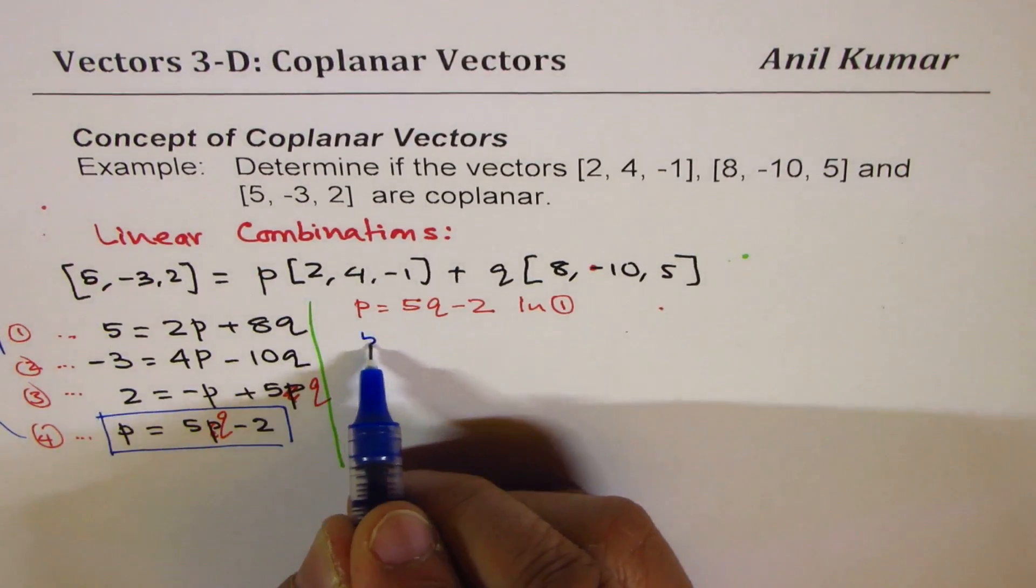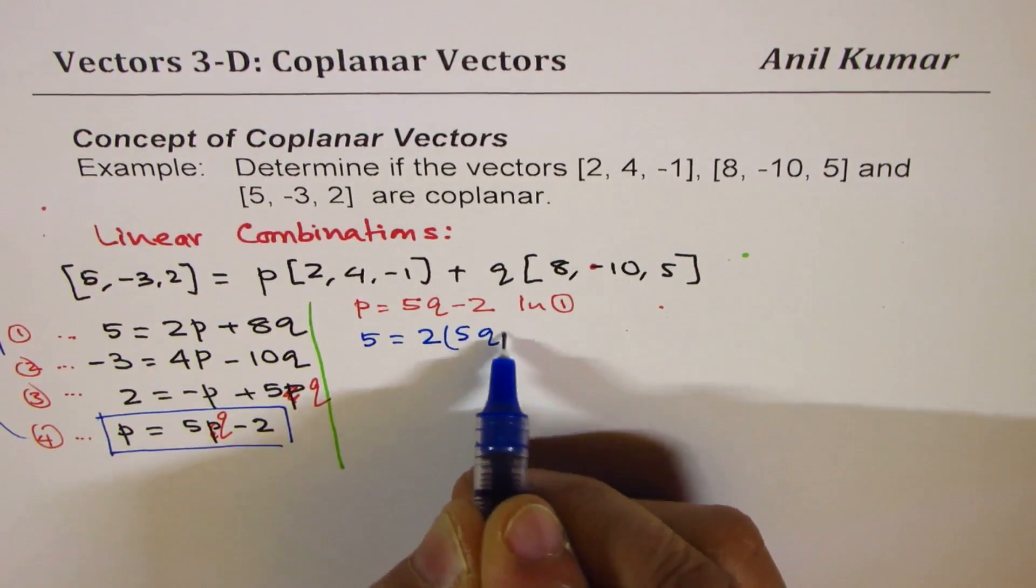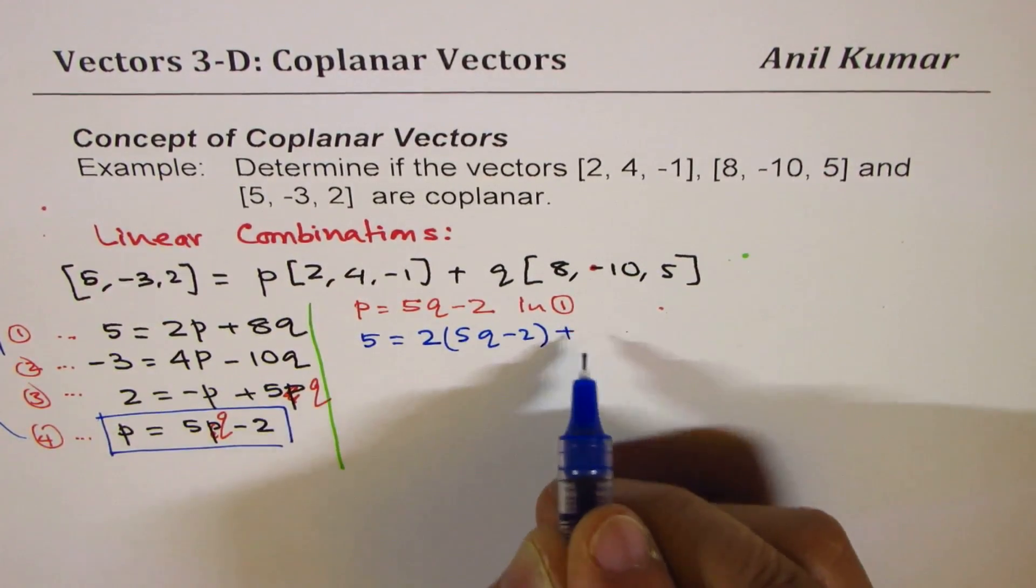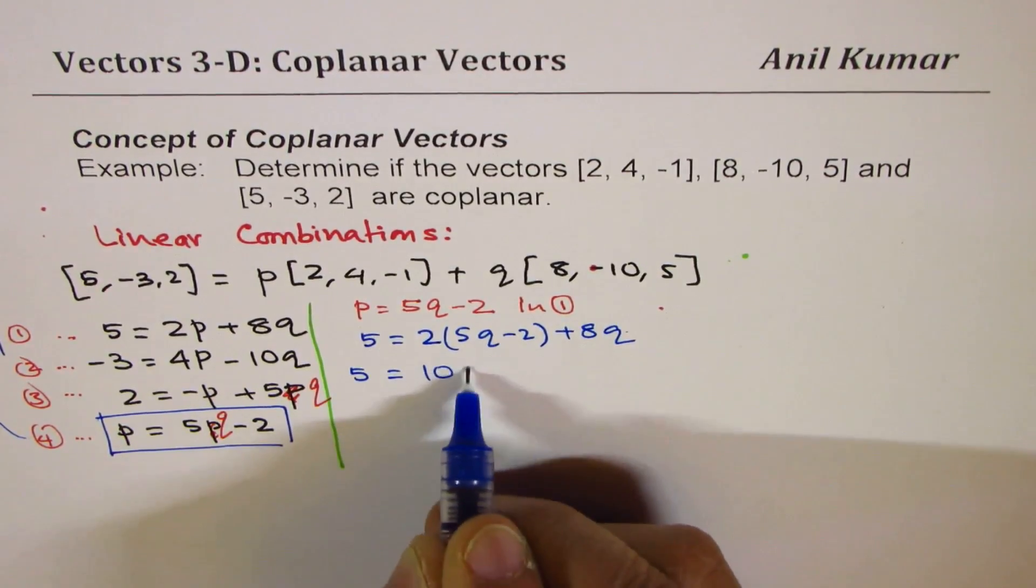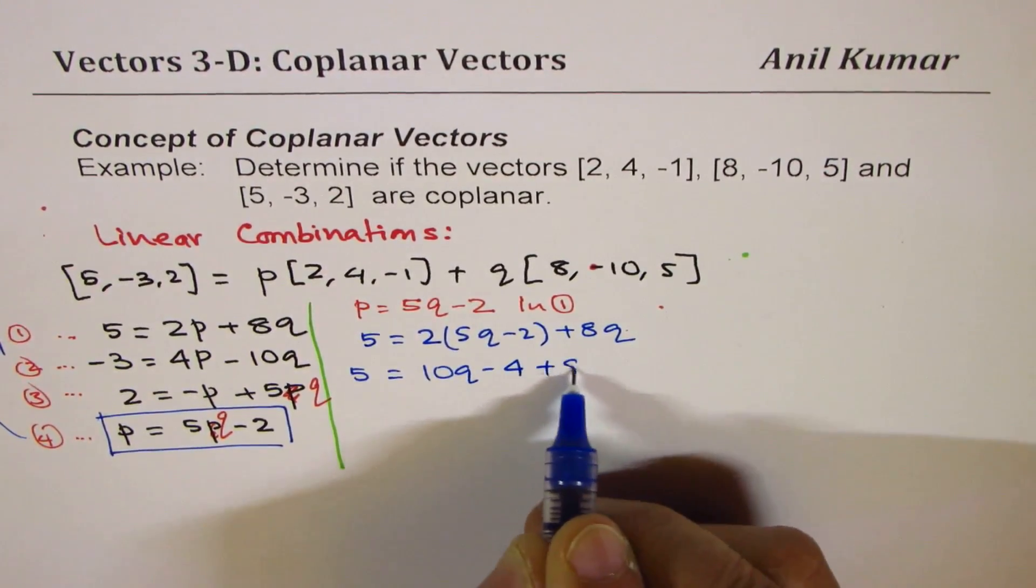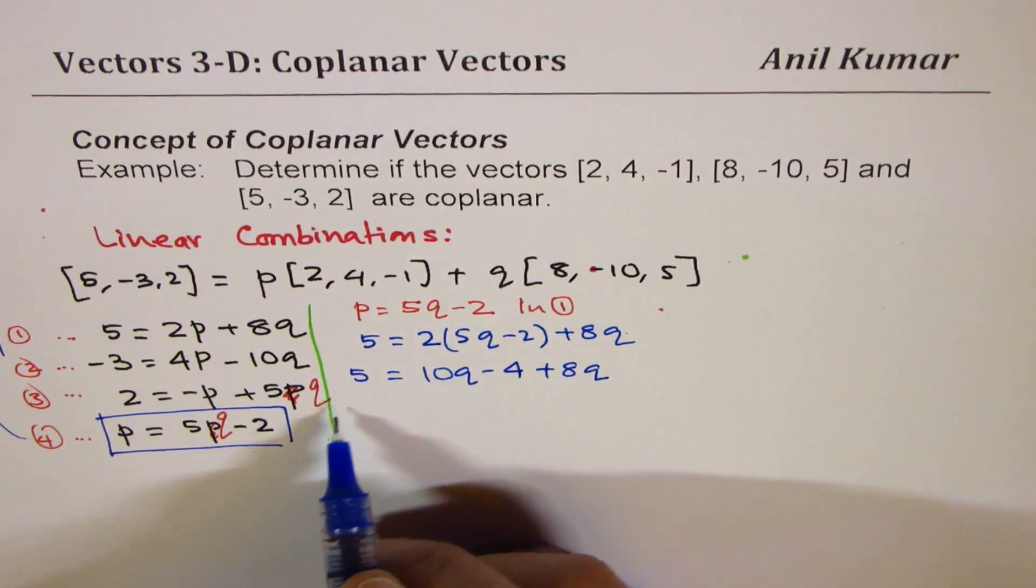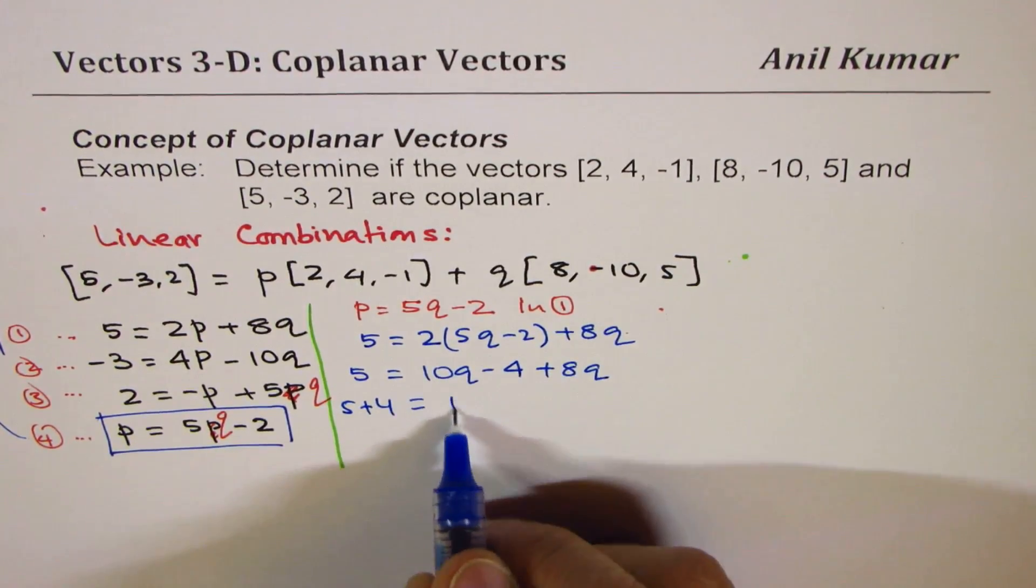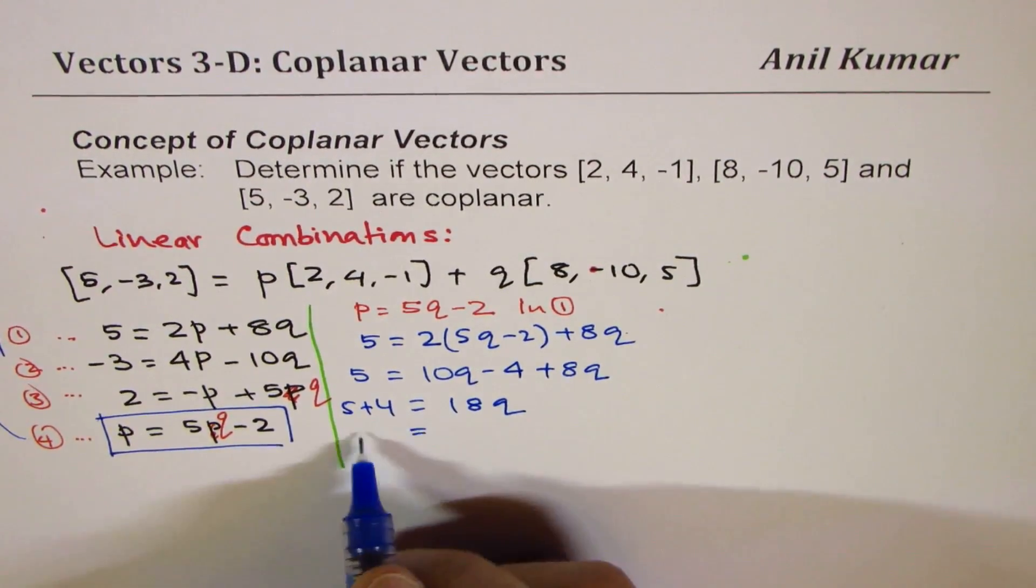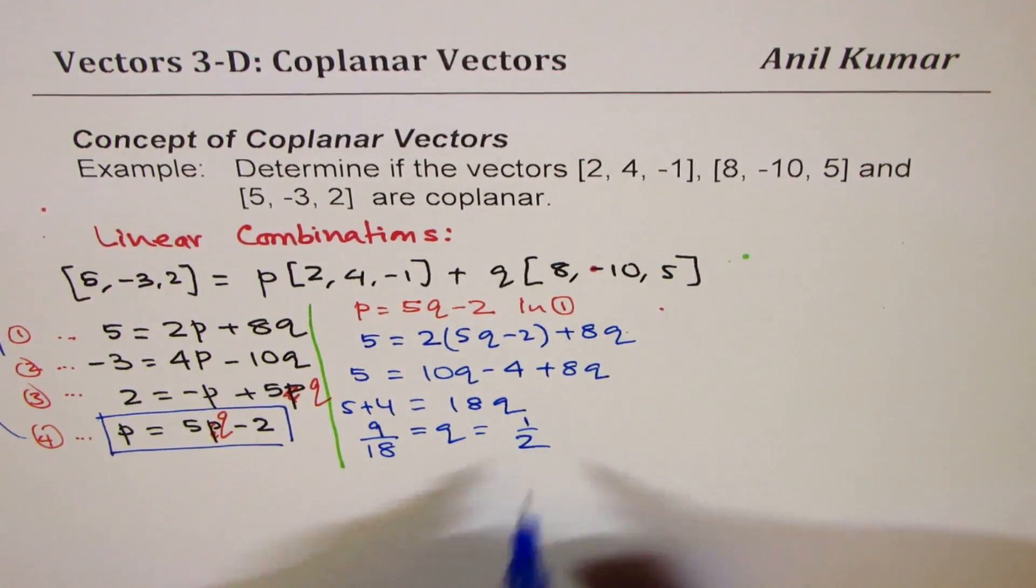We have this equation as 5 equals to 2 times P. So instead of P, I am writing 5Q minus 2 plus 8Q. So that gives me 5 equals to 10Q minus 4 plus 8Q. Or bringing this 4 to this side, we get 5 plus 4 equals to 10 plus 8, which is 18Q. Or 9 divided by 18 is Q. So we get Q value as 1/2.